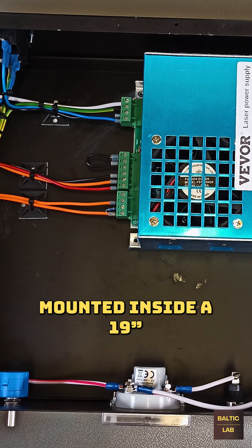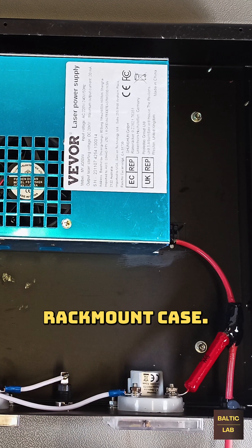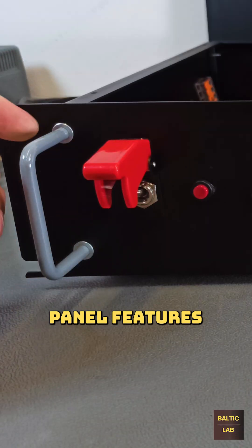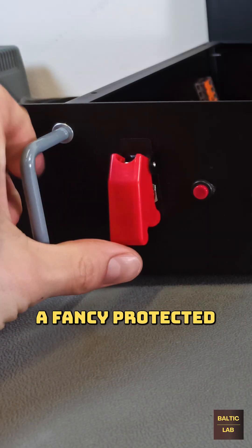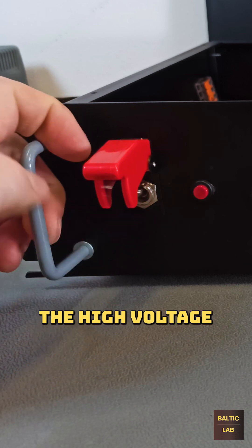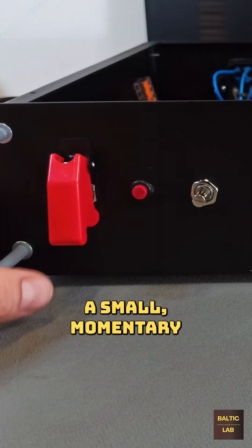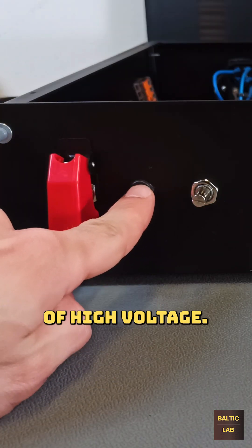The laser supply was mounted inside a 19-inch rack mount case. The front panel features a fancy protected single pole single throw switch to enable the high voltage output, and a small momentary switch for bursts of high voltage.